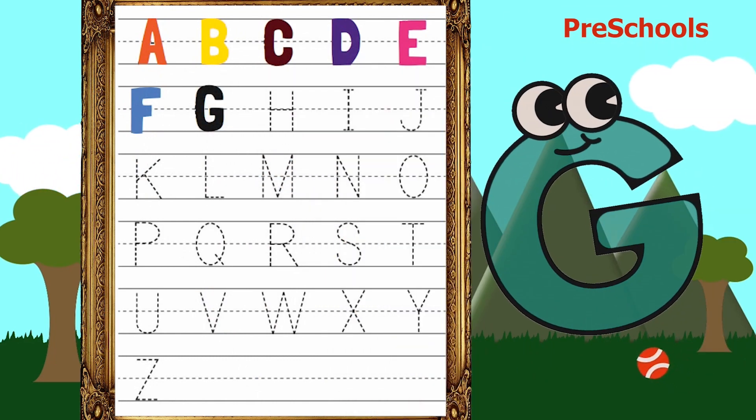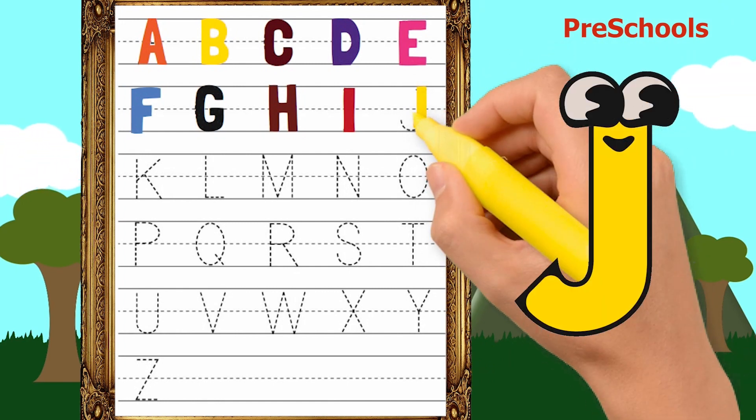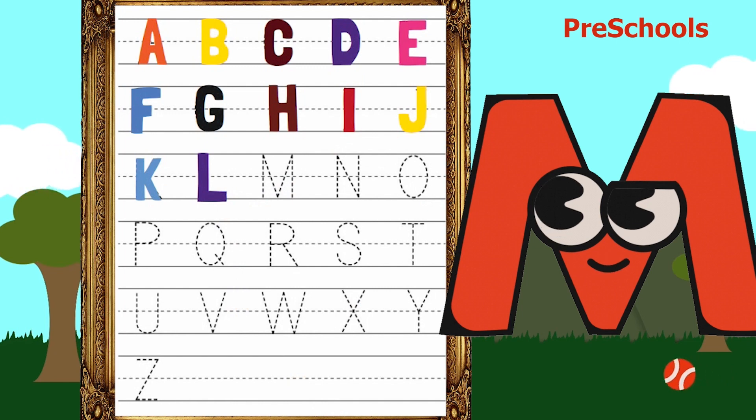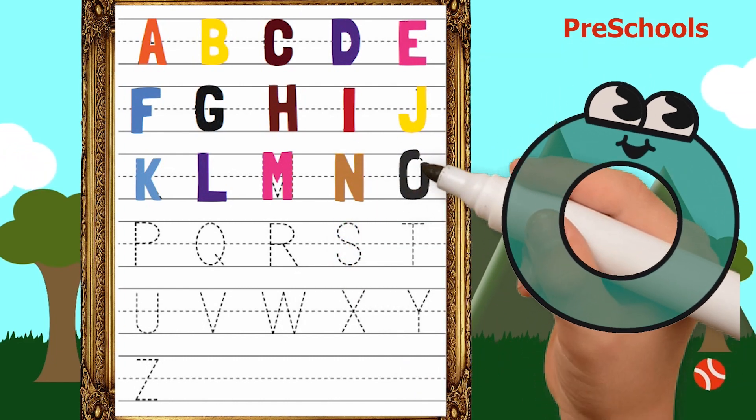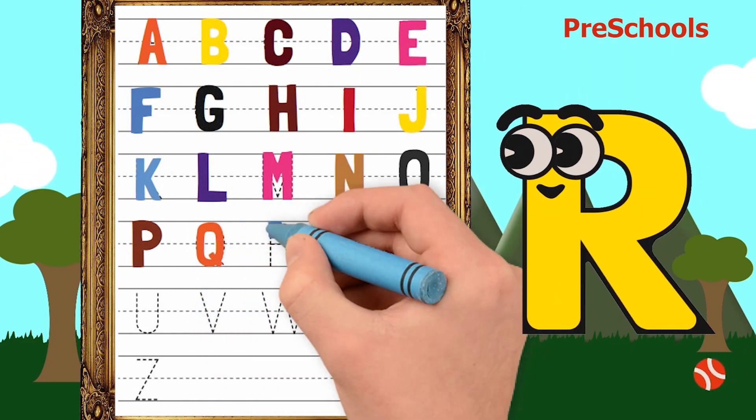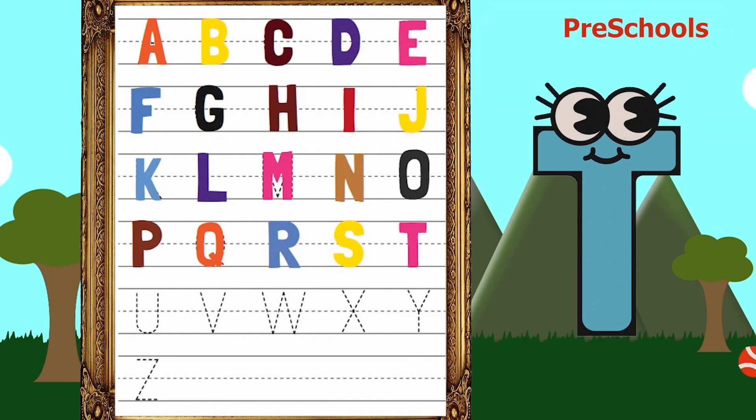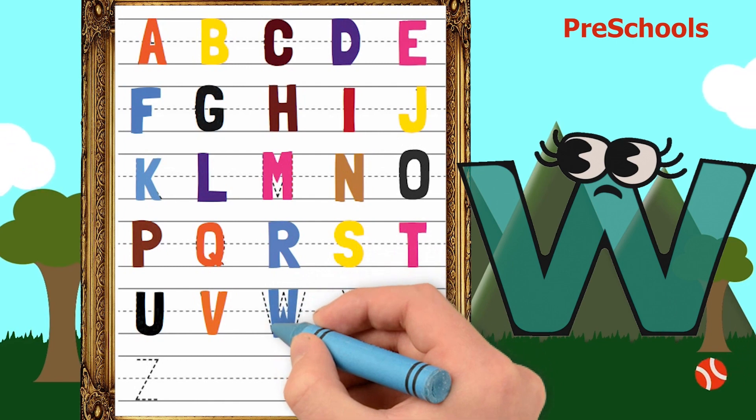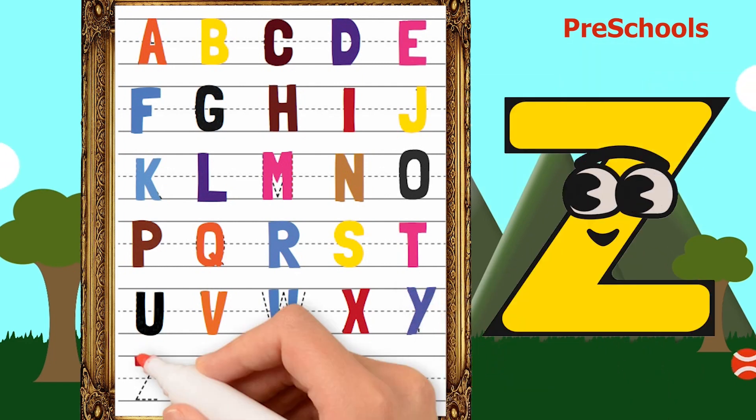G G for goat. H H for hen. I I for ice cream. J J for jug. K K for king. L L for lamp. M M for monkey. N N for nest. O O for owl. P P for pig. Q Q for queen. R R for rabbit. S S for sun.